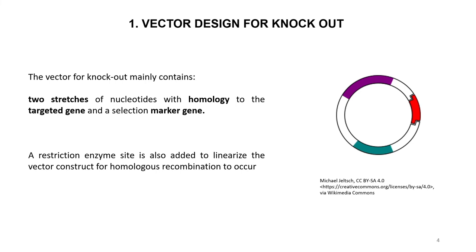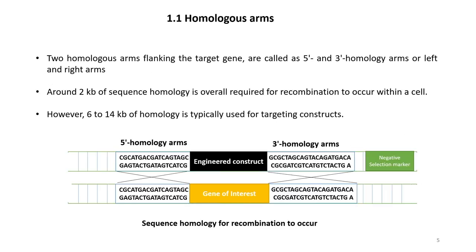For carrying out knockouts we have to use vectors. A knockout vector generally contains two stretches of nucleotides with homology to the targeted gene and a selection marker. The selection marker helps in selecting a successful knockout. There is also a restriction site used to linearize the vector construct for homologous recombination to occur, because the target organism will have DNA in a linearized form.